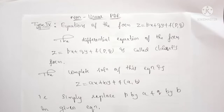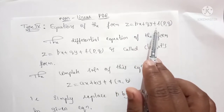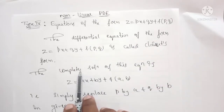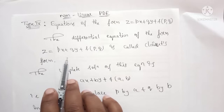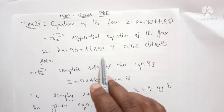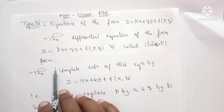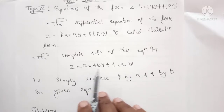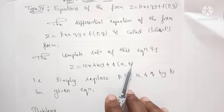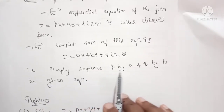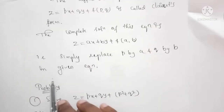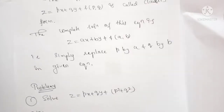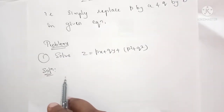The equations of the form Z equals PX plus QY plus F(P, Q) are called the Clairaut's form. The complete solution of this equation is given by Z equals AX plus BY plus F(A, B) — that is, simply replacing P by A and Q by B in the given equation. Solutions are very simple, so let us consider the first problem.